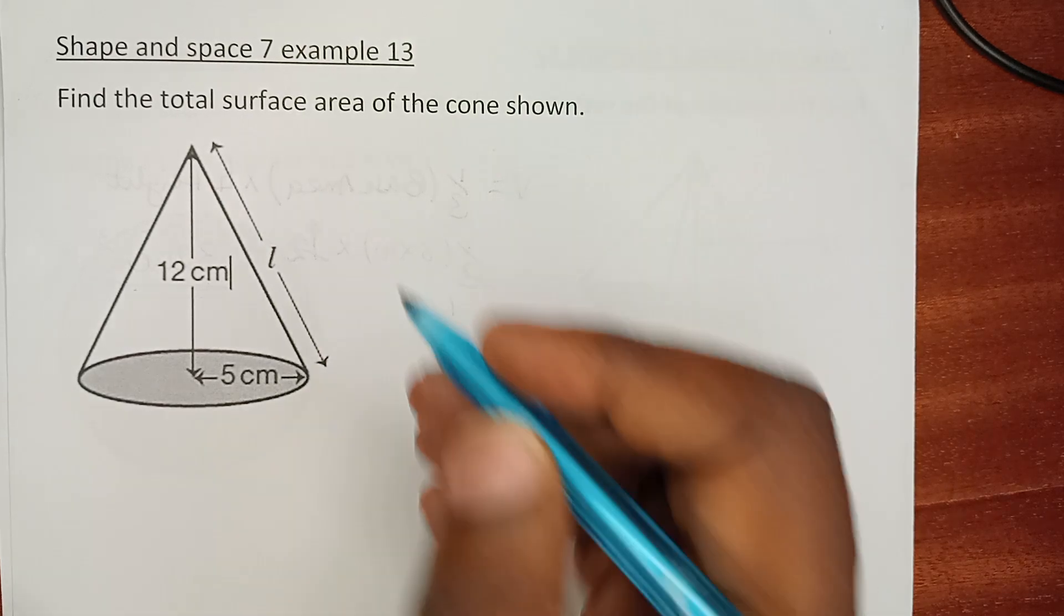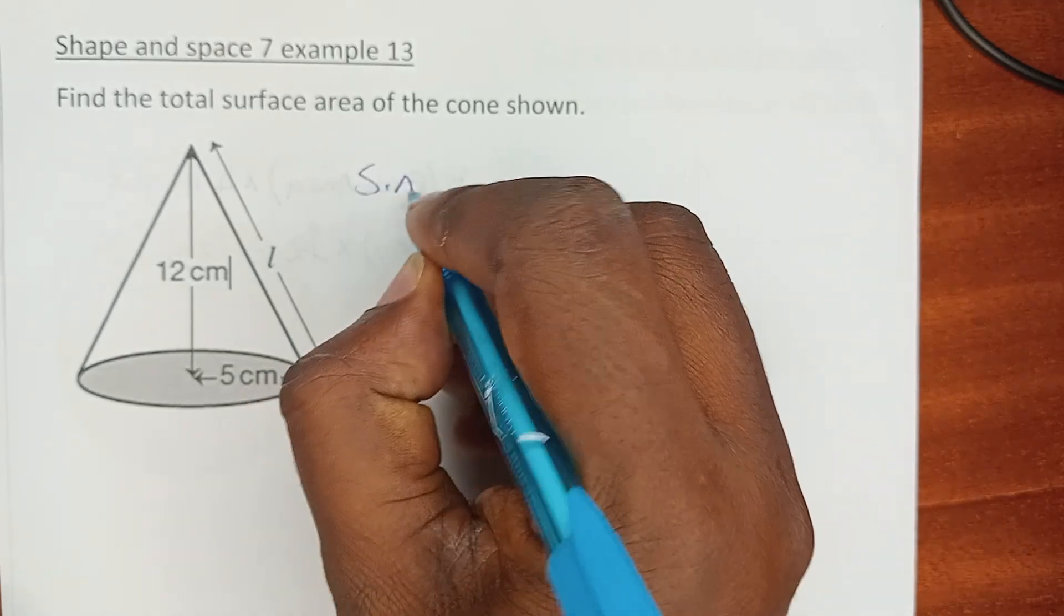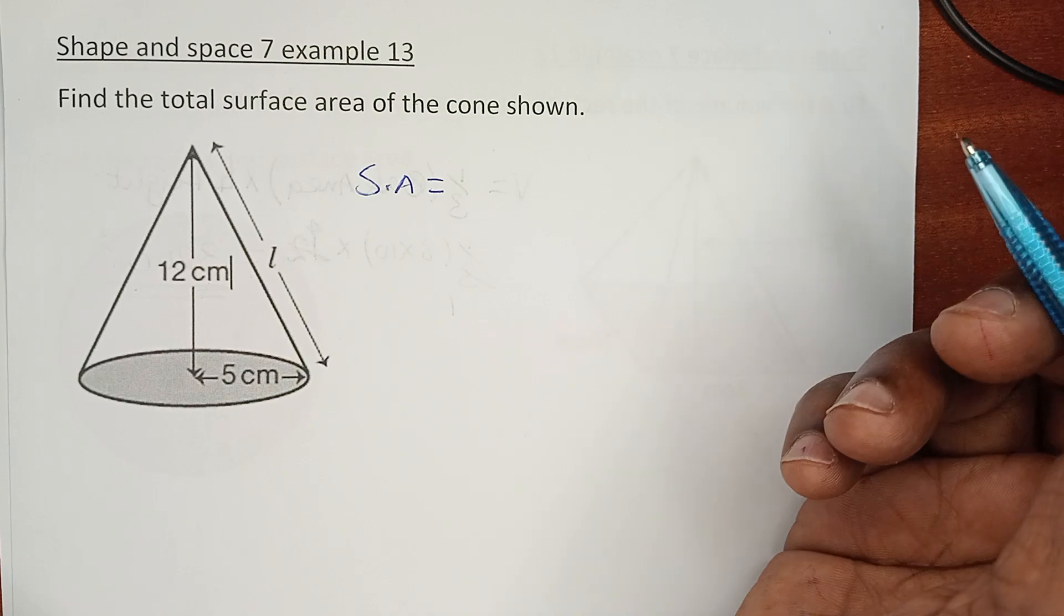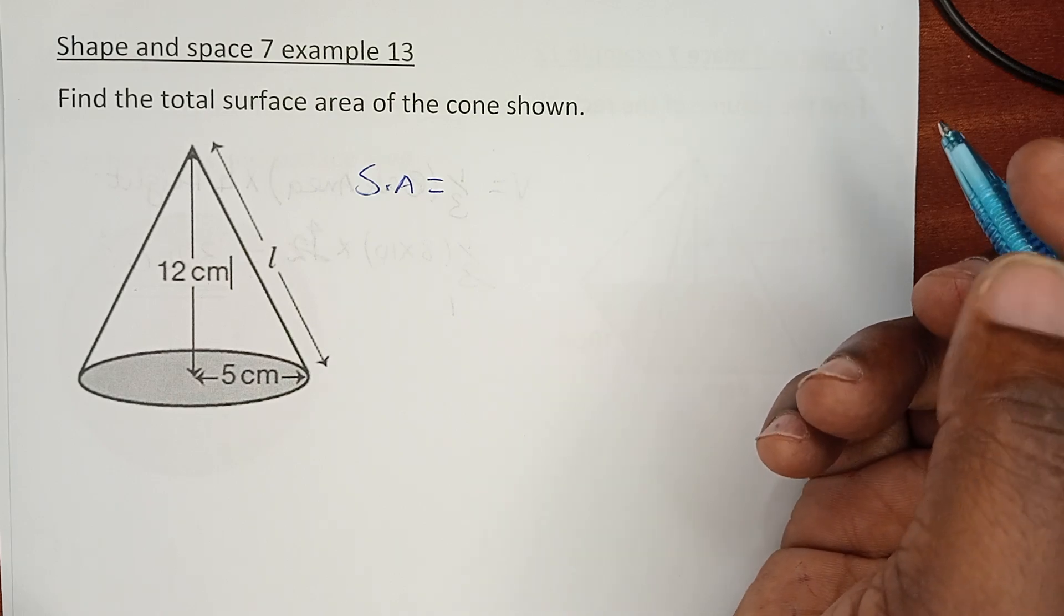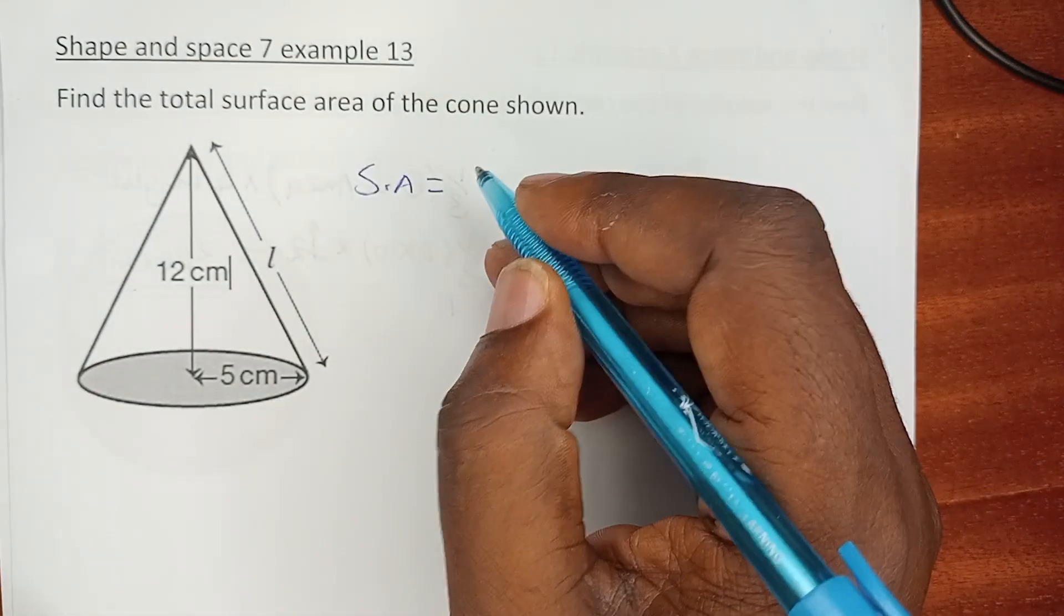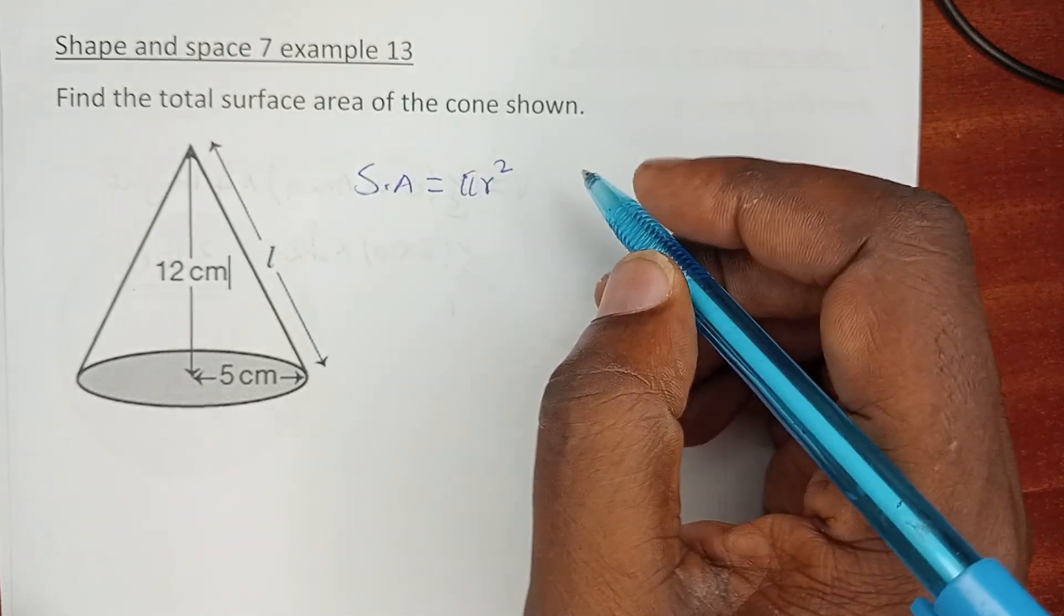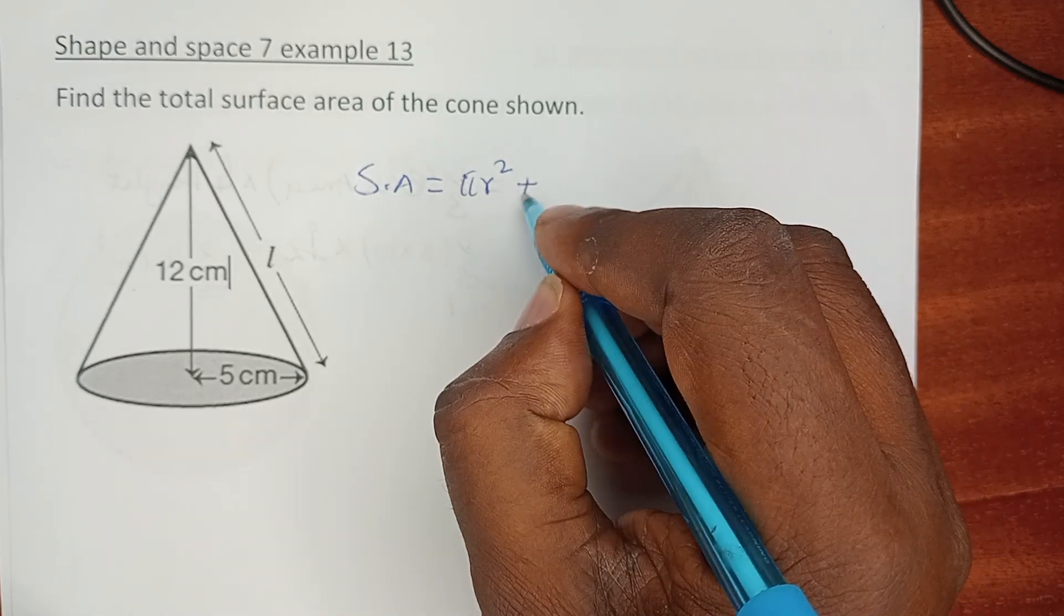The surface area is the area of base plus the area of the curved surface. The area of the base is πr² plus the area of the curved surface is πrL.